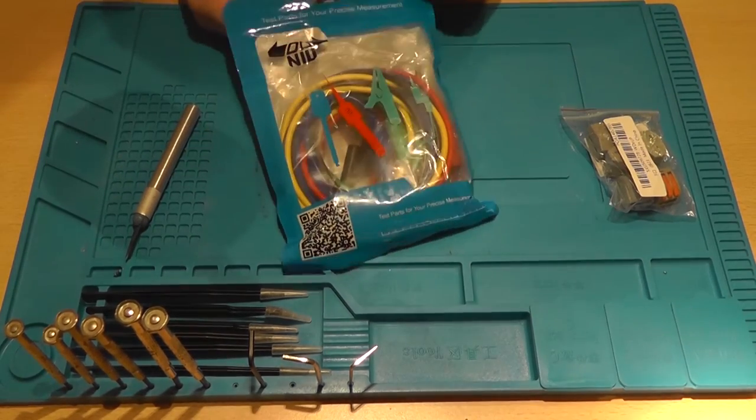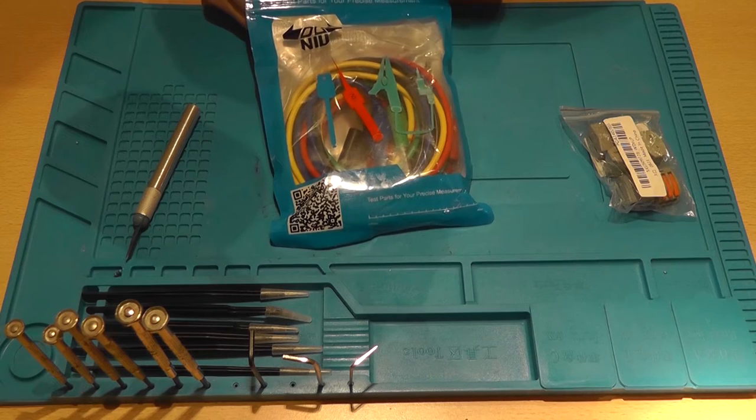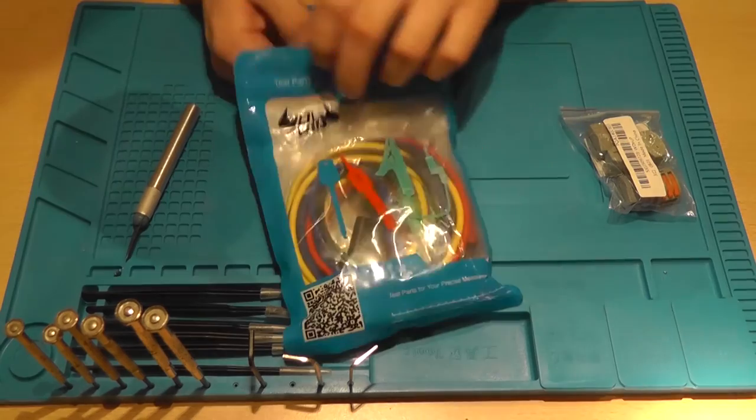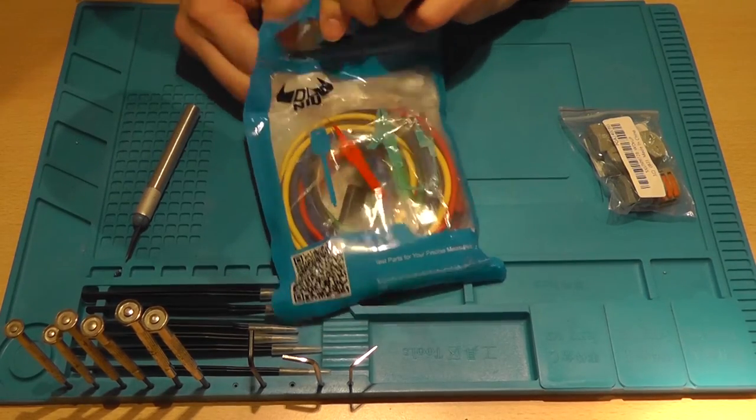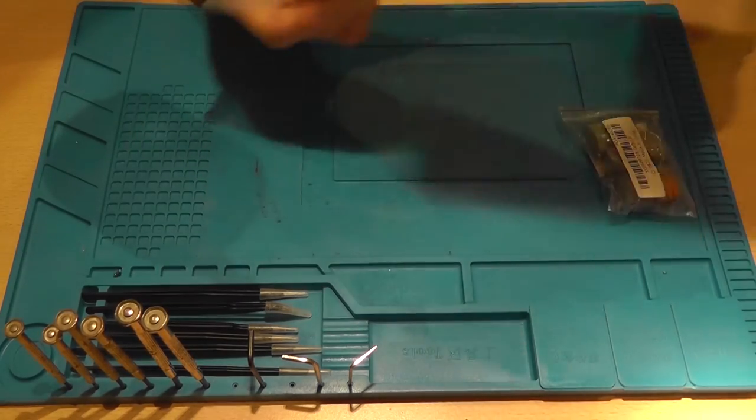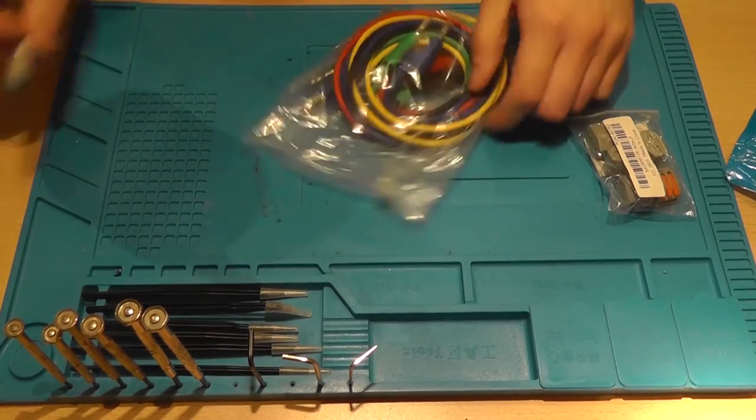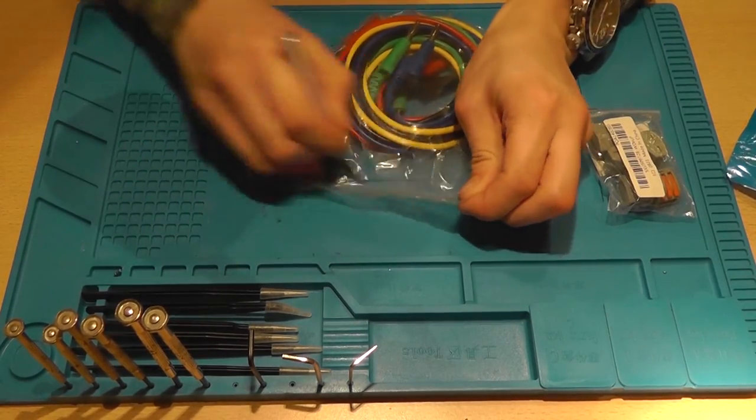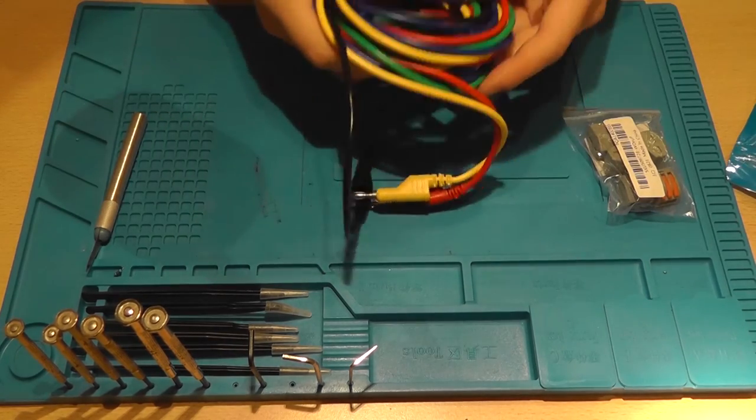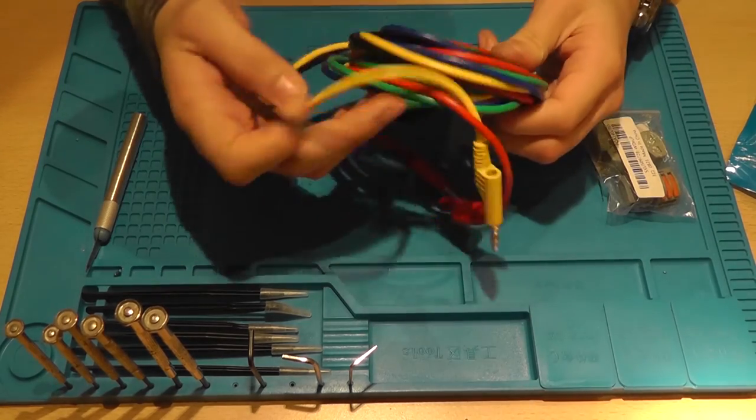This label has test parts for your precise precision, precise measurement. Well it's a tiny new. I've cut through the thing. Damn, a bag in a bag in a bag. How many bags can you have man. That's really bad for the environment.